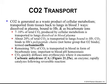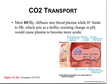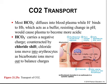CO2 quickly diffuses into erythrocytes, where it encounters carbonic anhydrase — an enzyme that catalyzes its conversion into carbonic acid, which is quickly converted into bicarbonate and protons. The bicarbonate can move into the plasma, and the protons can reside inside the erythrocyte or in the plasma. Most bicarbonate diffuses into the plasma while the protons bind to hemoglobin. This acts as a buffer resisting change in pH, which would cause the plasma to become more acidic. Bicarbonate carries a negative charge, and this is counteracted by the chloride shift, where chloride ions move into erythrocytes as bicarbonate ions move out to balance the charges.